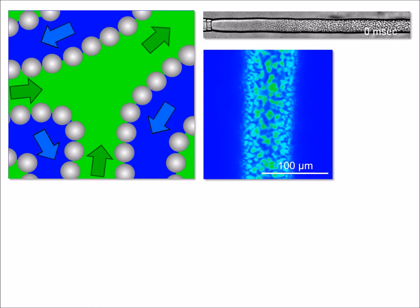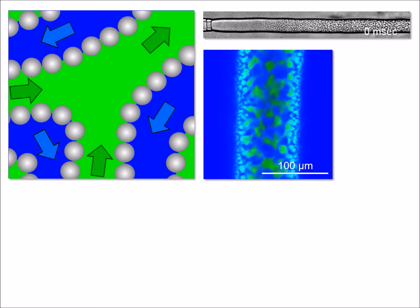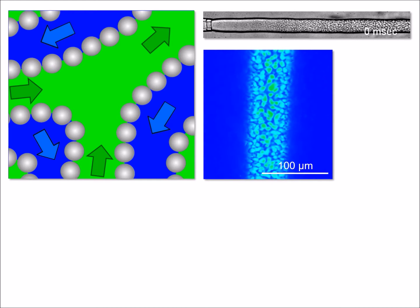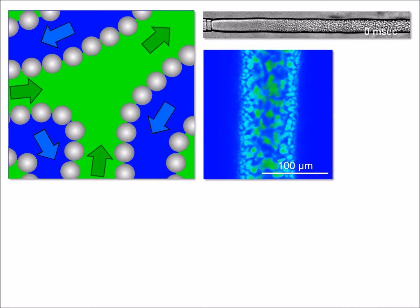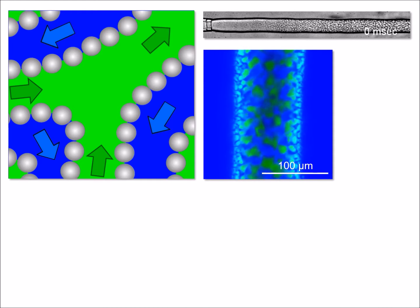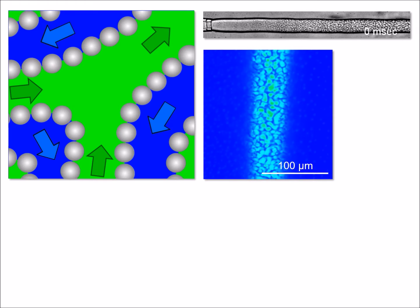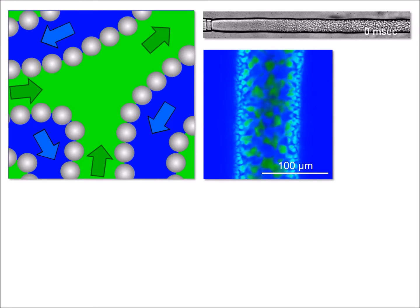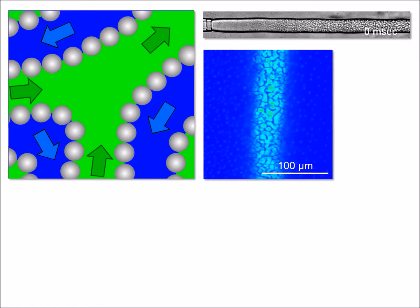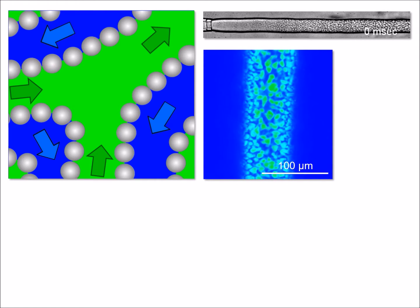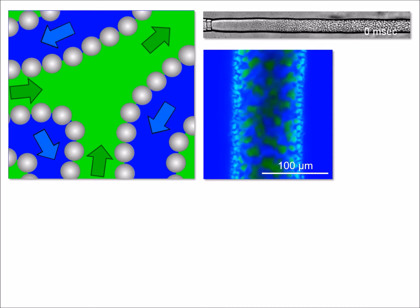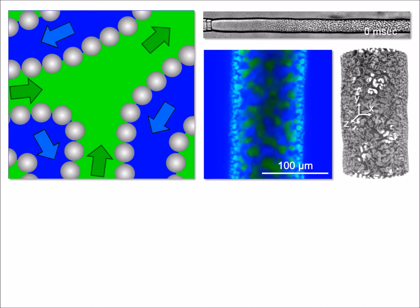Confocal laser scanning microscopy allows us to scan through the extruded material and look inside of it. We find a liquid fiber with a bicontinuous oil-water channel network. Green regions are made of oil, blue regions of water.